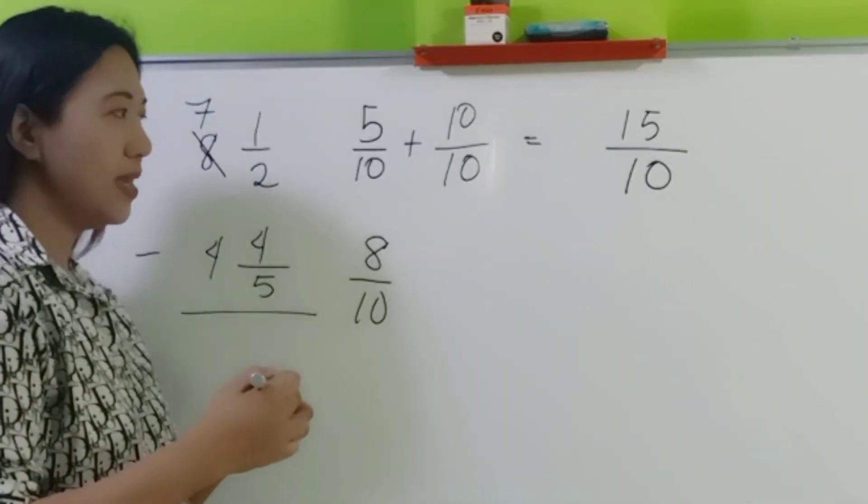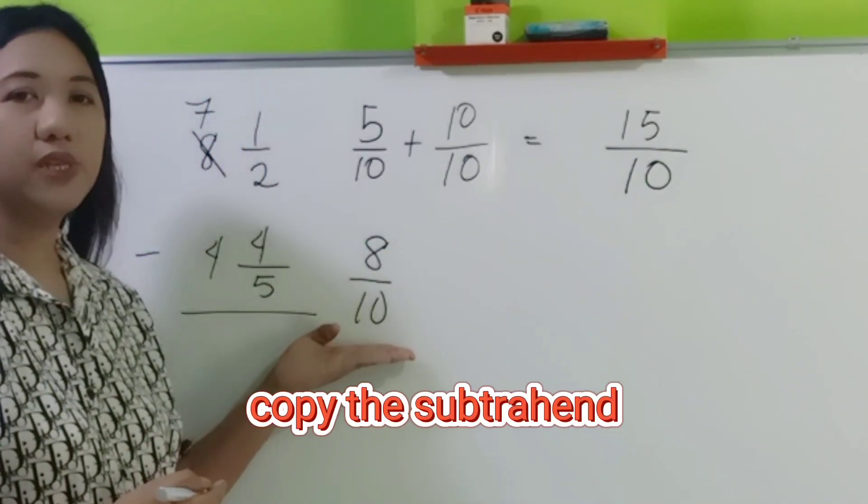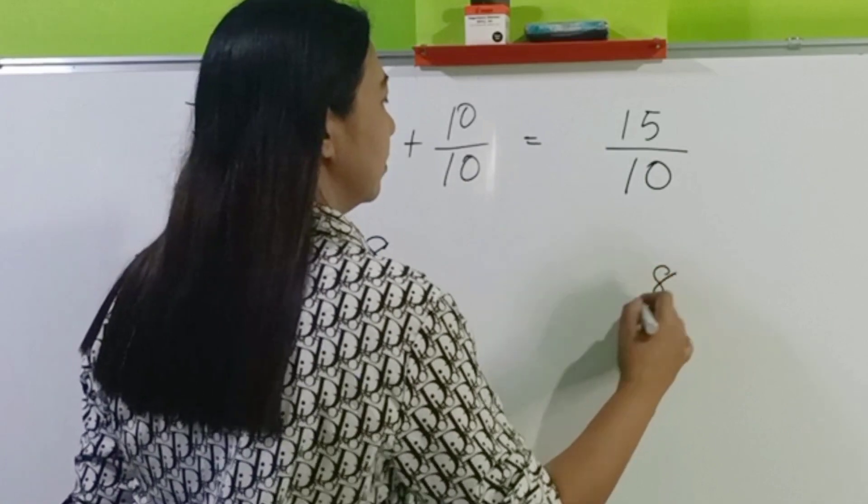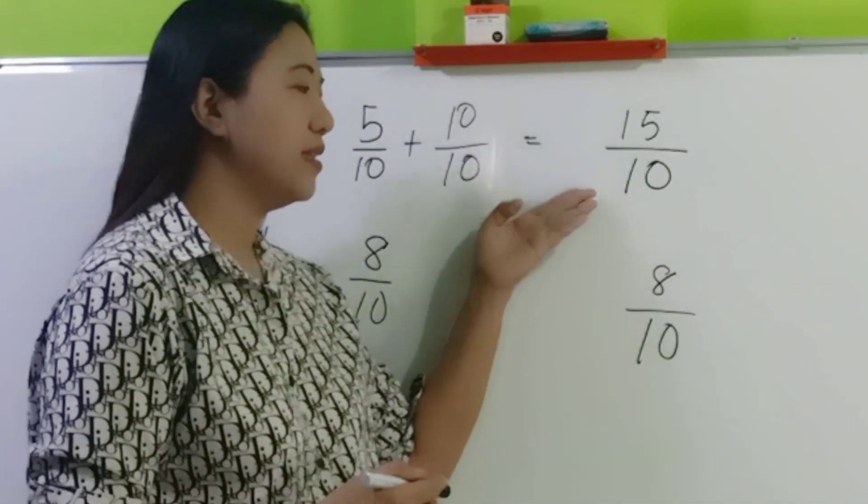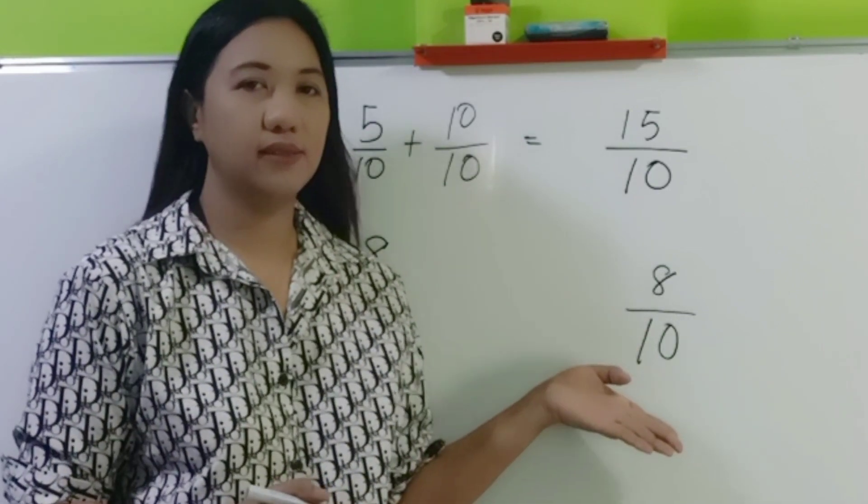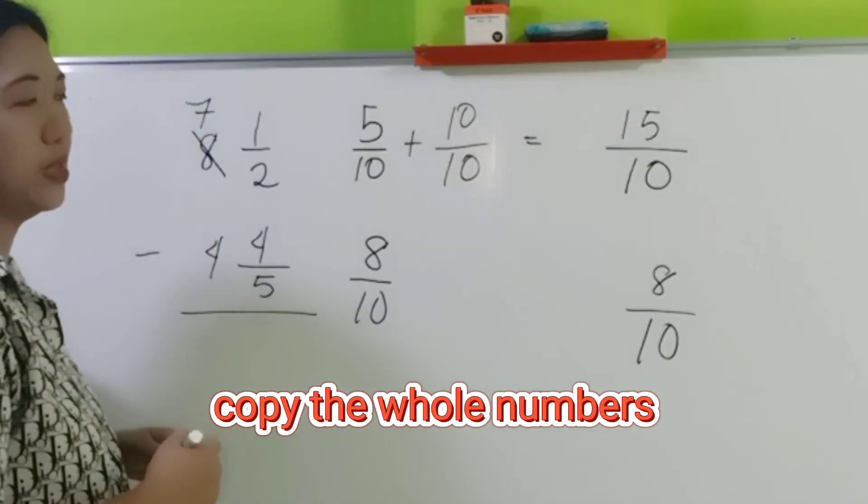Next step, add the numerators and then copy the common denominator. 5 plus 10 is 15. And then copy the common denominator. Next, copy now the subtrahend. So is 15 over 10 higher than 8 over 10?